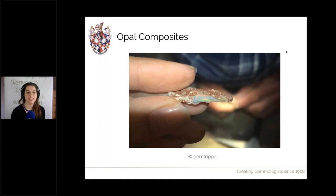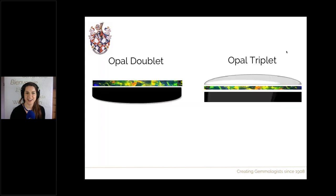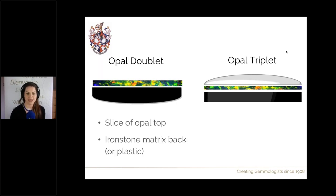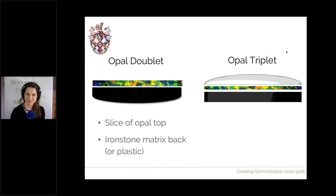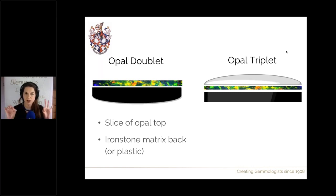The two opal composites on the market are opal doublets and opal triplets. Opal doublets use a thin slice of opal at the top, backed quite commonly with ironstone matrix — which can look very similar to a boulder opal, especially if the gem is set. Also common is a plastic backing. In either case, the adhesive used between the opal and the backing is often black, giving the opal a dark background that enhances the play of colour.